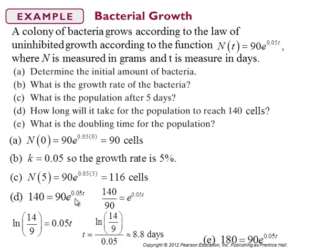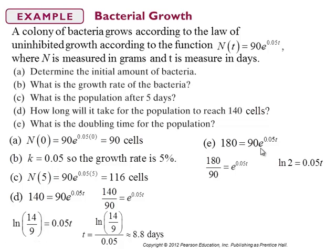Part E: what is the doubling time for the population? The doubling time is the amount of time it takes to go from the initial quantity to 180, or from any quantity to twice that quantity. Set N equal to 180, solve for t. 180 over 90 is 2, so you have ln(2) = 0.05t. Divide both sides by 0.05, and that works out to be about 13.9 days — whether going from 1,000 to 2,000 cells or from 20,000 to 40,000 cells.